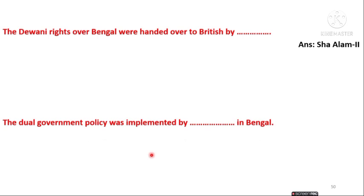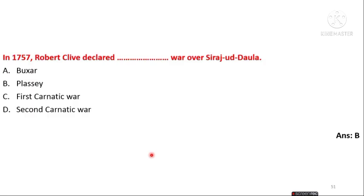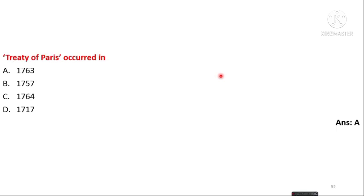The dual government policy was implemented by Robert Clive as governor general in Bengal. In 1757, Robert Clive declared the Plassey War over Siraj ud-Daulah. The Treaty of Paris occurred in 1763. These are the most important questions discussed in this chapter.